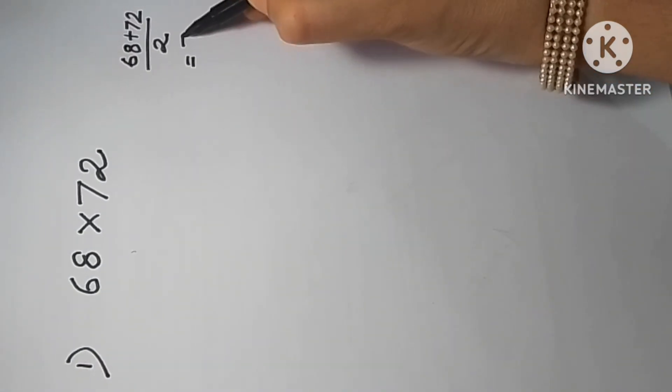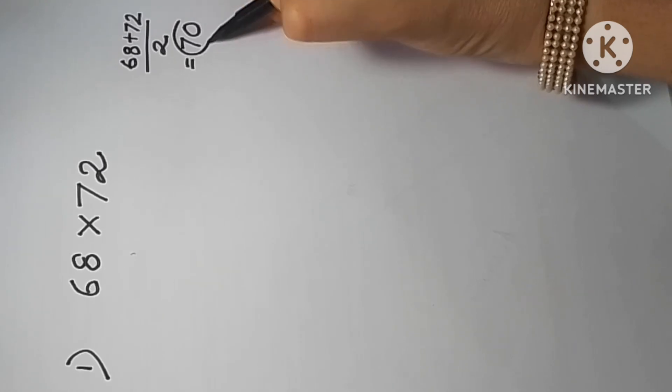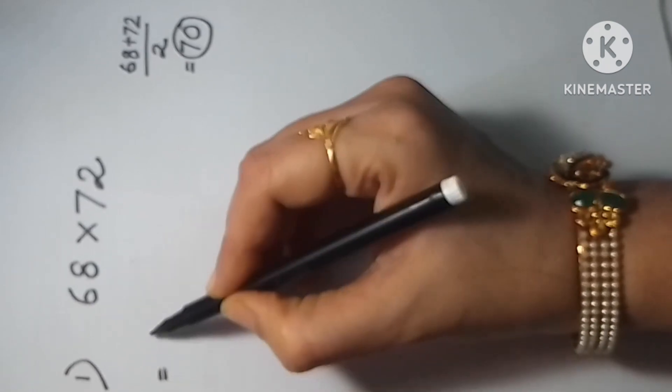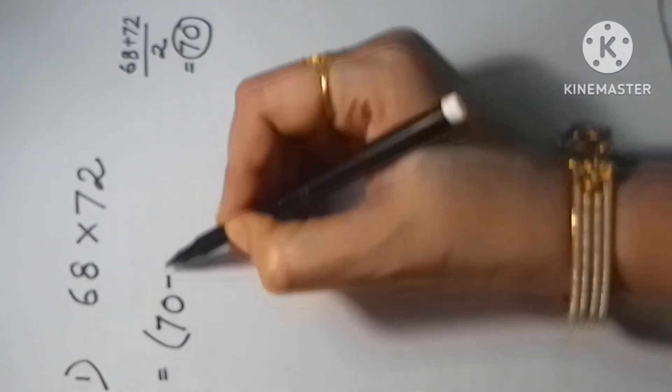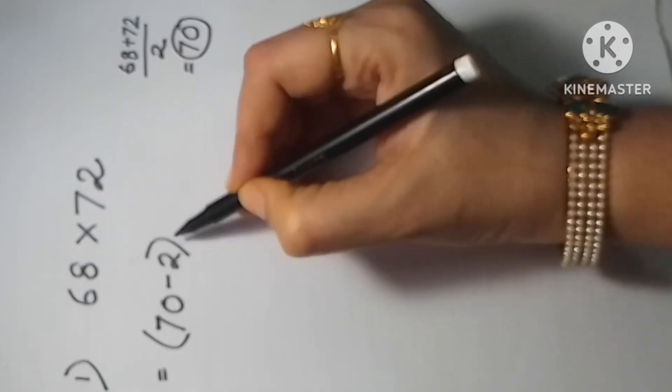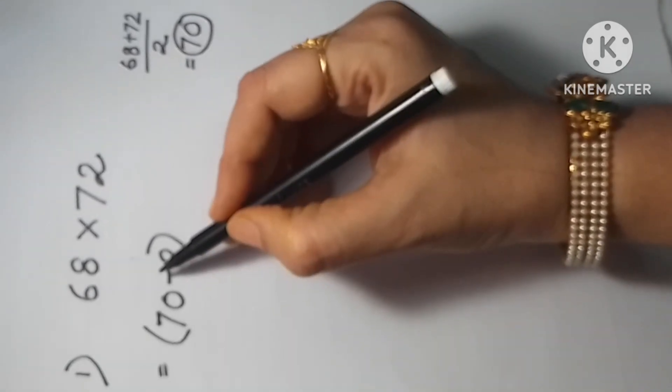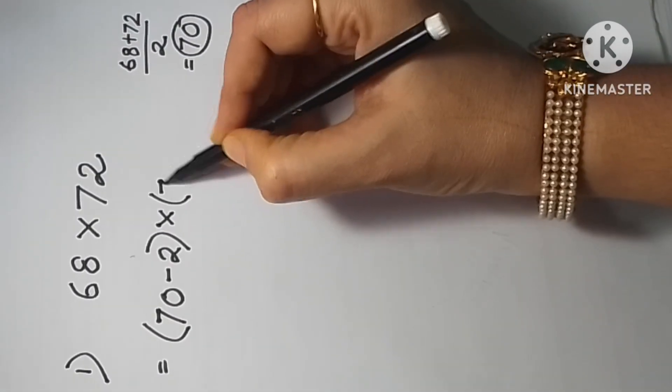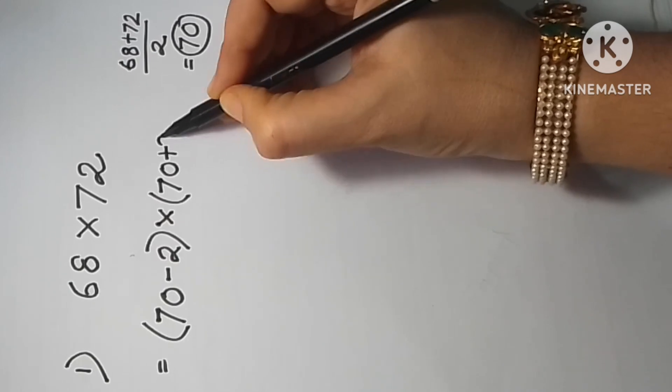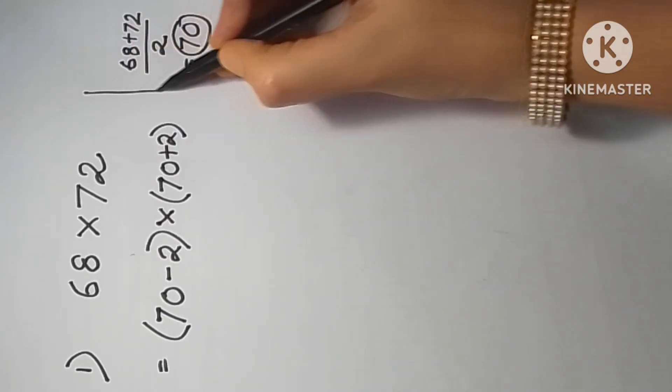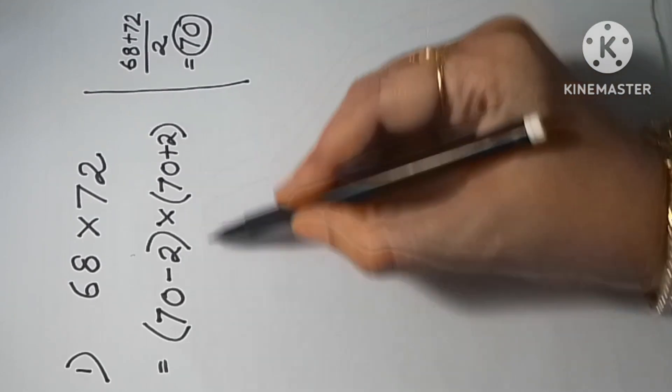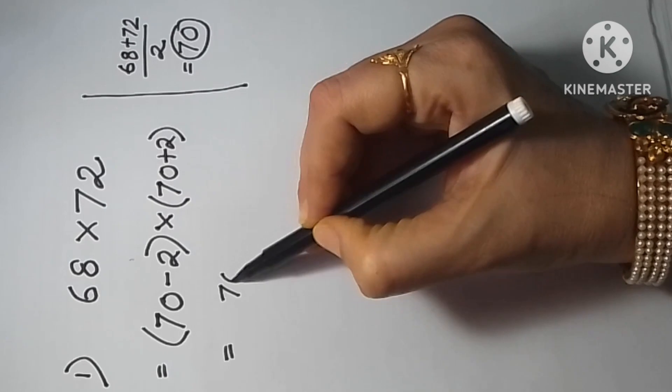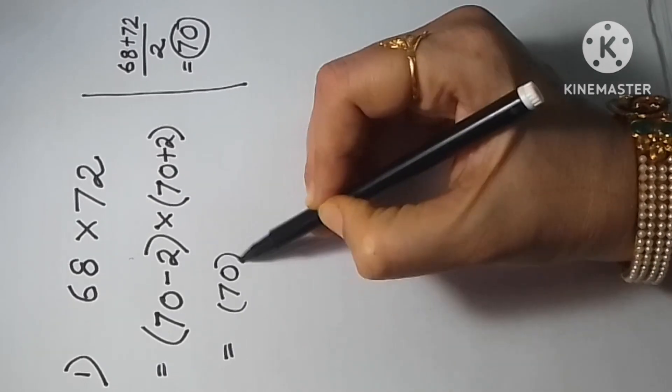Now 68 and 72 we have to write down as (a+b)(a-b). To do that, we write 70-2 and 70+2. You can see we got (a+b)(a-b), where a is 70 and b is 2. According to the identity formula, we can write a²-b², which is 70²-2², and the result is here.